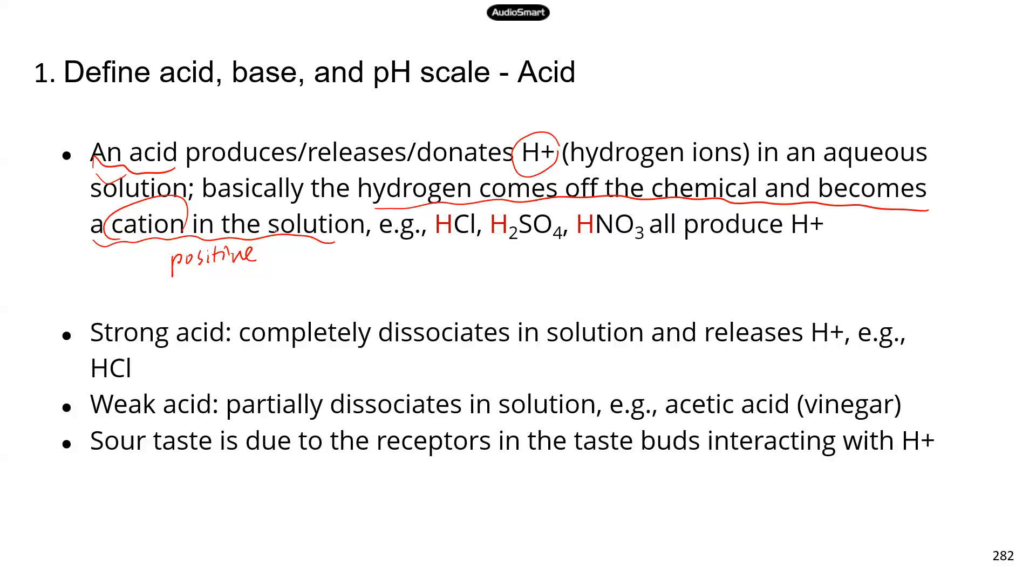There are some examples of acids: hydrochloric acid, sulfuric acid. All these things can produce a hydrogen ion. So these are actually pretty strong acids. A strong acid is something that can completely dissociate in solution and release hydrogen ion.